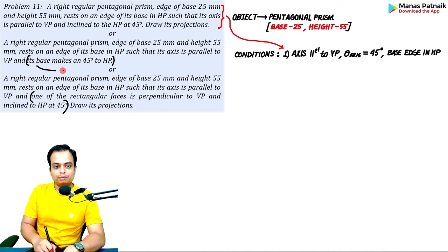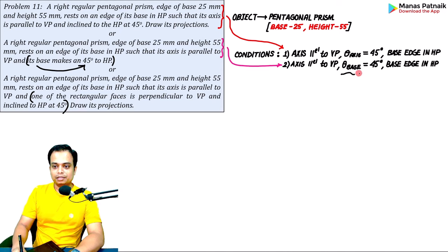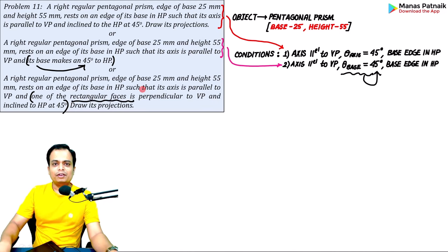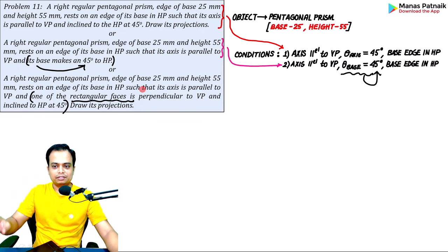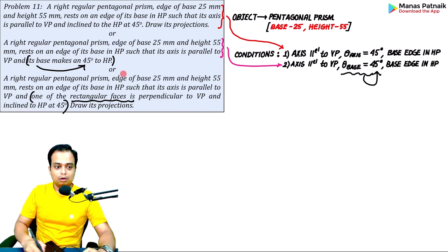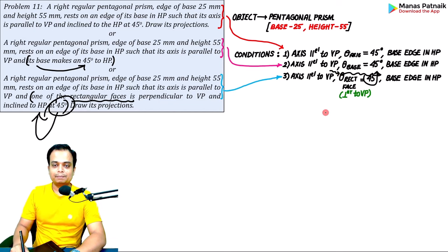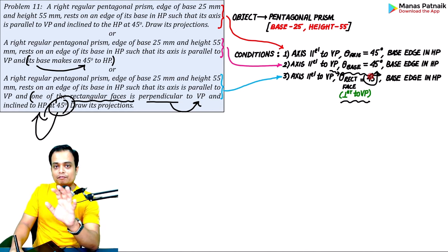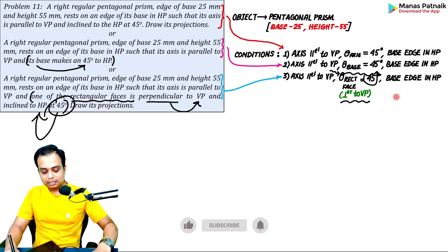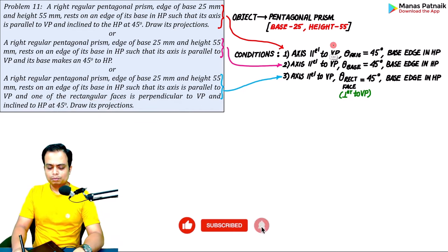In version 2, the base is making an angle of 45 degrees with respect to the HP. In version 3, one of the rectangular faces — there are five rectangular faces — is making an angle of 45 degrees with the HP. Any angle made with respect to HP is represented by theta. The face is also perpendicular to VP. So these are all the data given to us across the three versions.